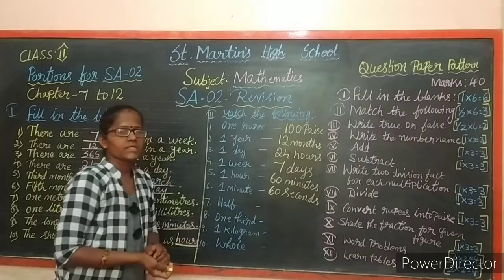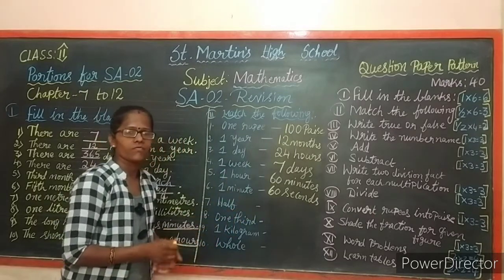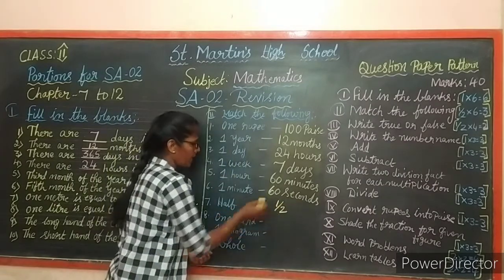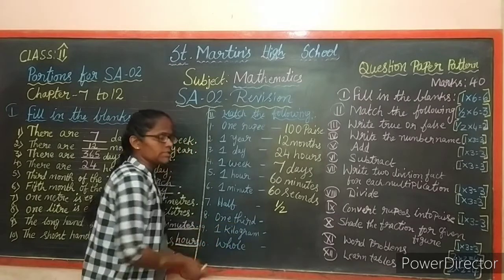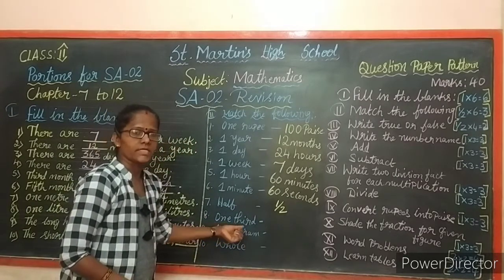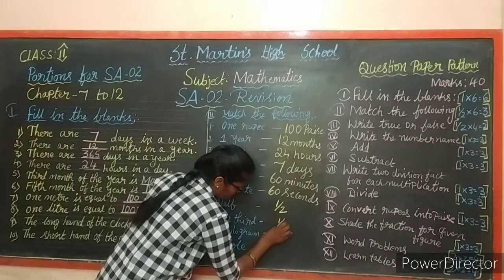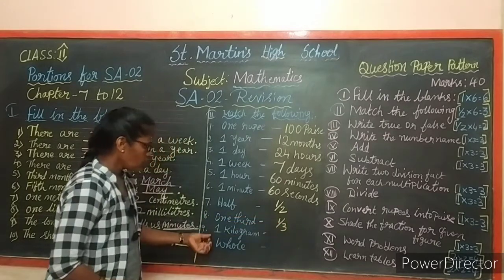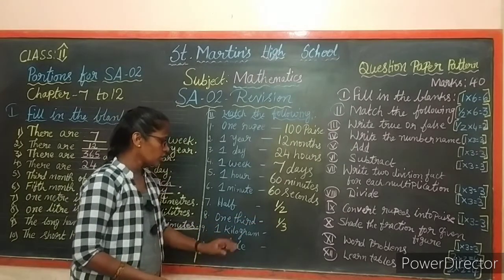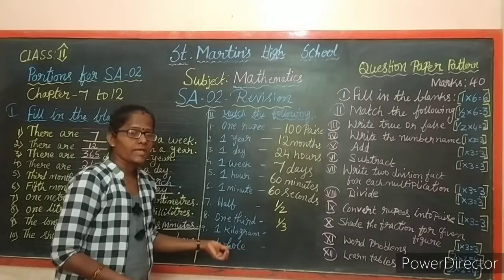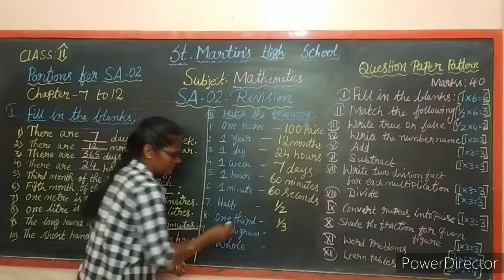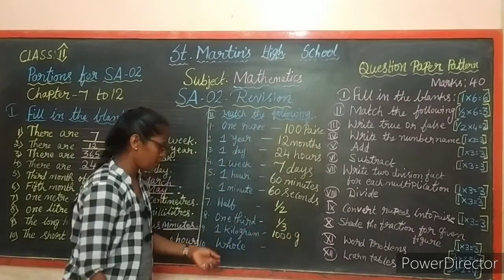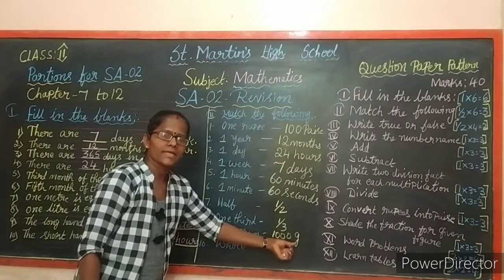Now in the fraction, how do we write one half? We write it as 1 by 2. One third in fraction is written as 1 by 3. Next: 1 kilogram equals how many grams? 1000 grams. 1 kilogram equals 1000 grams.